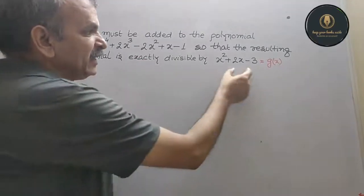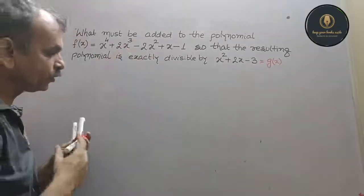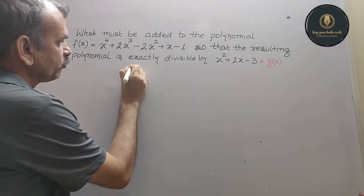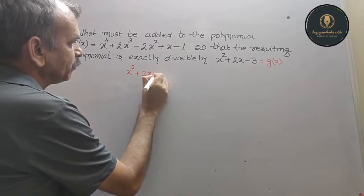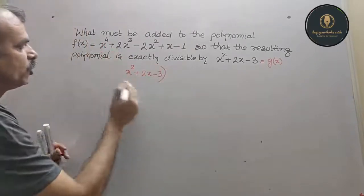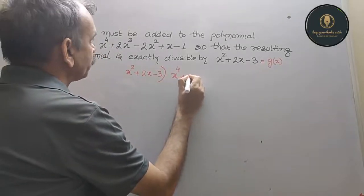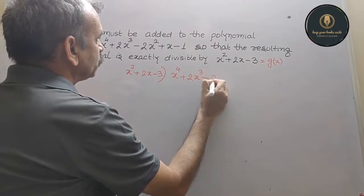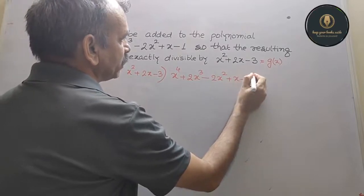We need g(x) to divide f(x). So we set up: x² + 2x - 3 dividing x⁴ + 2x³ - 2x² + x - 1.